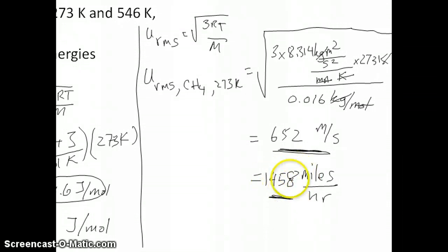There's not a lot of things that move this fast. So your car, at the most, can go what, 100 miles per hour before you get caught by the cops. So this is really a fairly high speed. Think about it. This is the average speed of a gas particle, CH4.